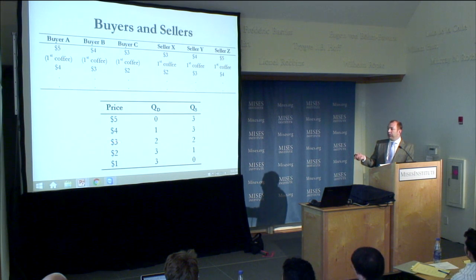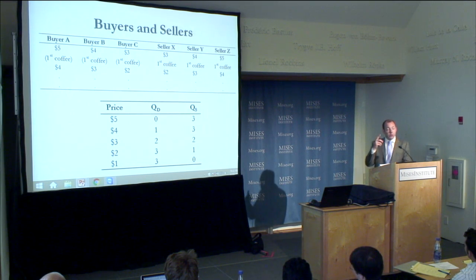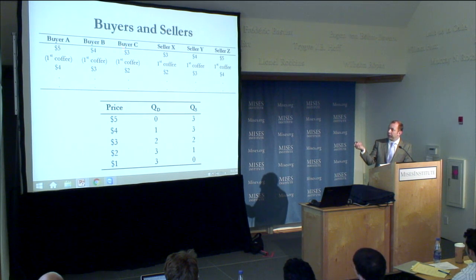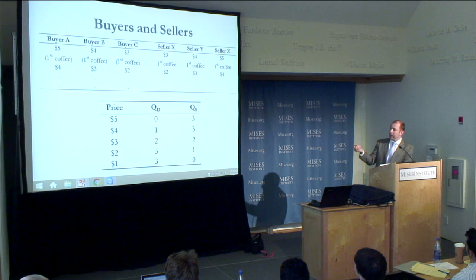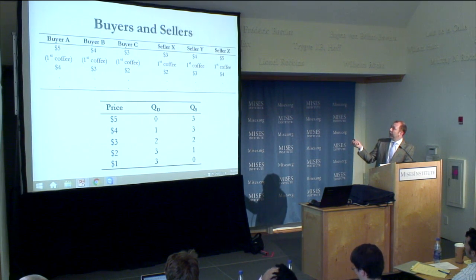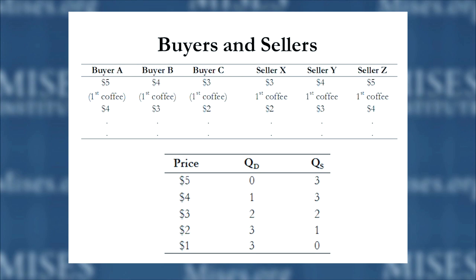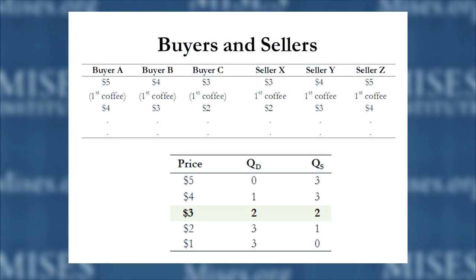At three dollars, everybody's happy. All buyers who valued coffee more than three dollars traded their money for coffee — that's buyers A and B. Buyer C did not, and he's okay with that; he's happier with his three dollars than he would have been with the coffee. At the same time, at three dollars, all the relevant sellers are happy — seller X and Y would rather get rid of their coffee than keep three dollars. The quantity of two is set equal on both sides at that one market price of three dollars. This is the process of price formation that stems directly from the value scales of all individual buyers and sellers interacting in the market.